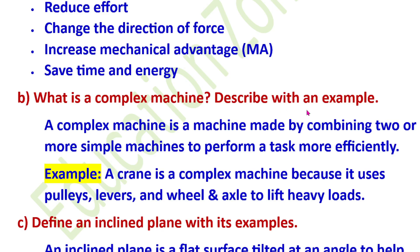What is a complex machine? Describe with an example. A complex machine is a machine made by combining two or more simple machines to perform a task more efficiently.